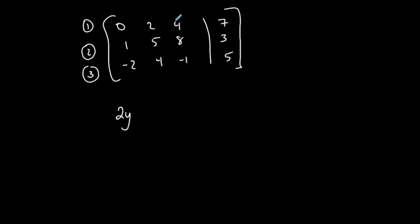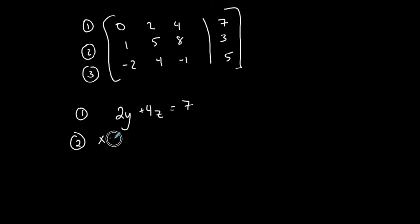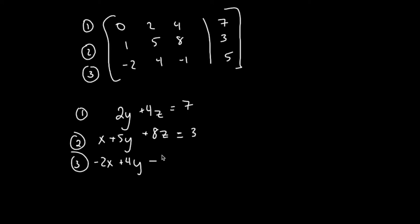Converting back to the system: equation one across the top gives zero x, which is nothing, plus two y plus four z equals seven. Equation two: one x plus five y plus eight z equals three. Equation three: negative two x plus four y minus one z equals five. So here is the system of equations that comes from that augmented matrix.